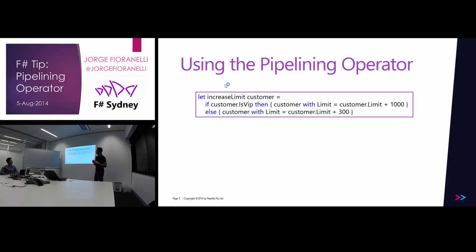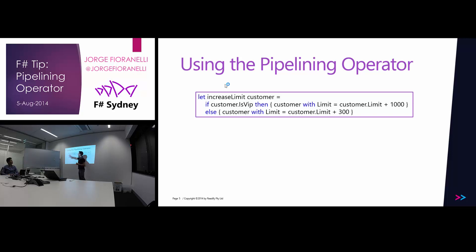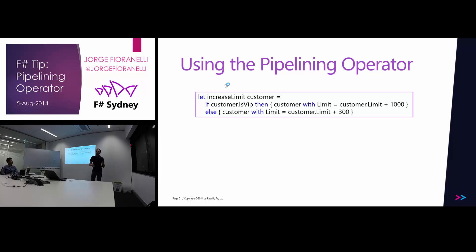Let's say you have a customer, and the customer could be either VIP or not VIP. We have a function here called increase_limit. If this is the first time you see F# code: the first thing is the name of the function, followed by the arguments, and then the definition. This function checks if the customer is a VIP — if so, we increase the spending limit of the customer by 1000, returning a new customer whose limit is incremented by 1000.